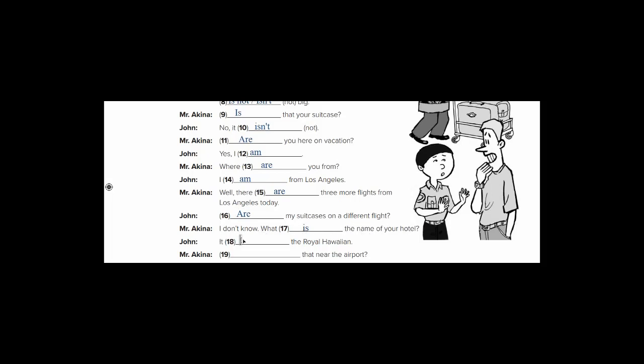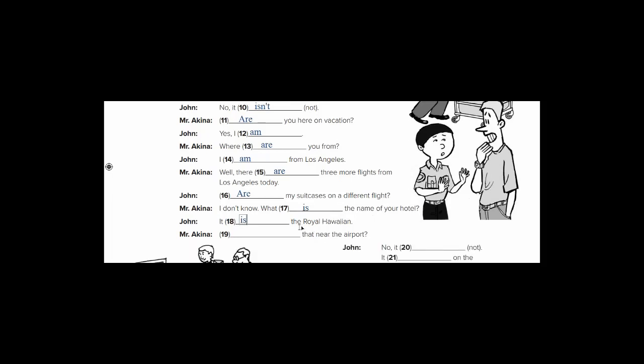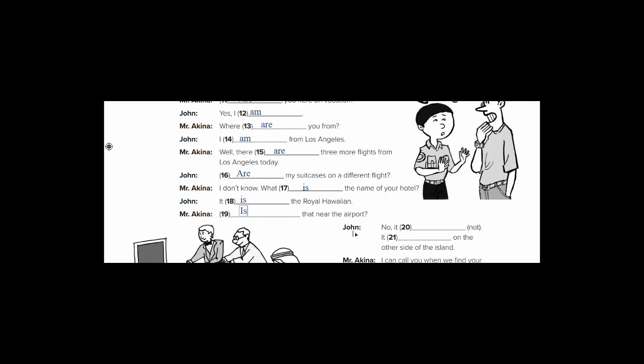It is the Royal Hawaiian. Royal means ملكي. Mr. Akina said, is that near the airport? That is singular, but make it capital because it's at the beginning of the sentence.